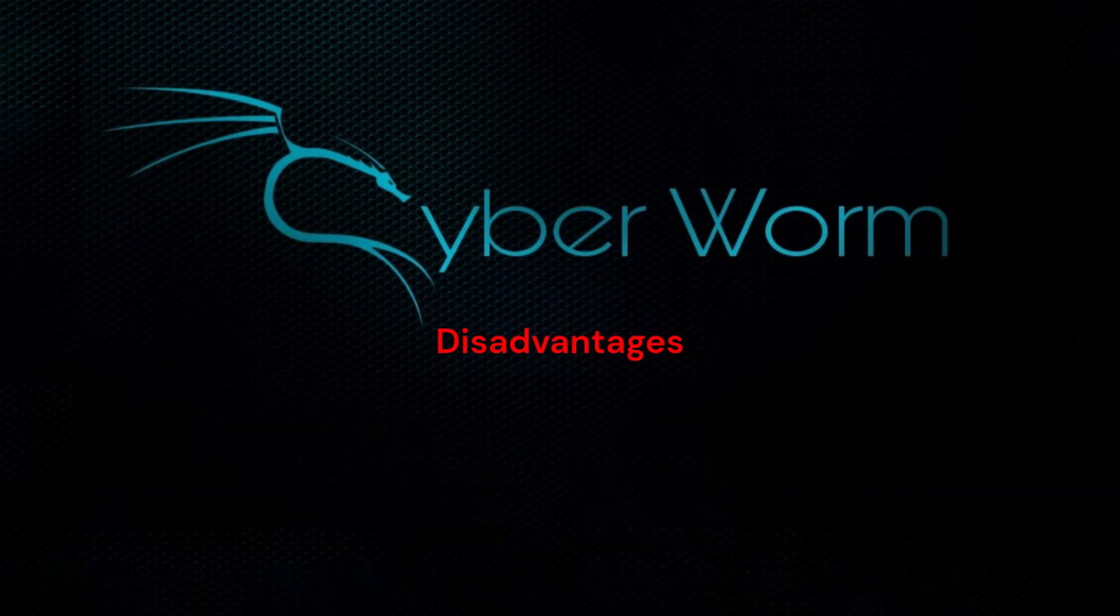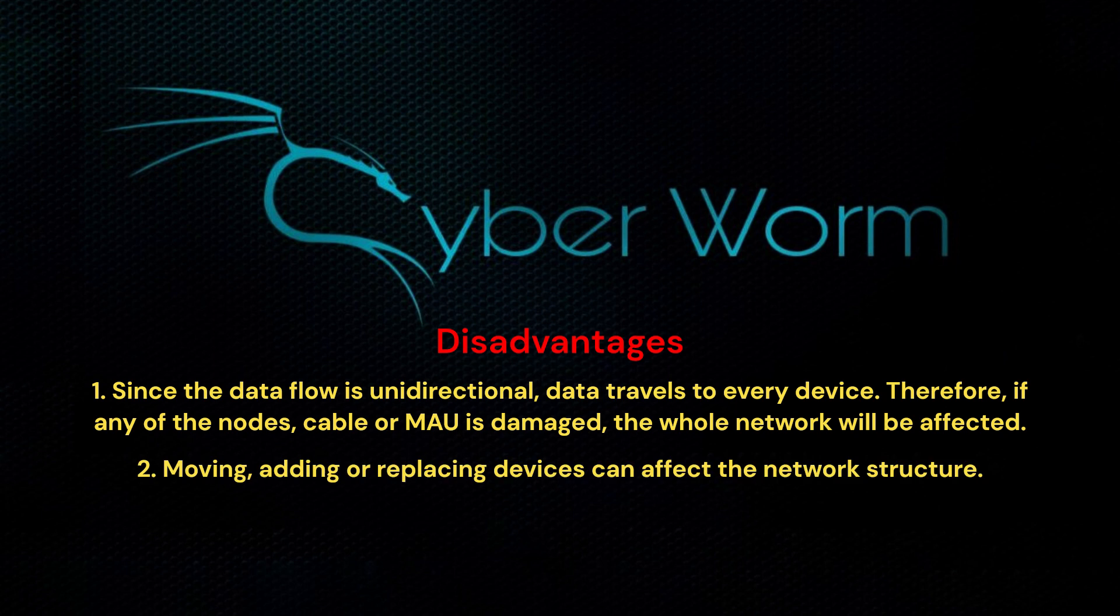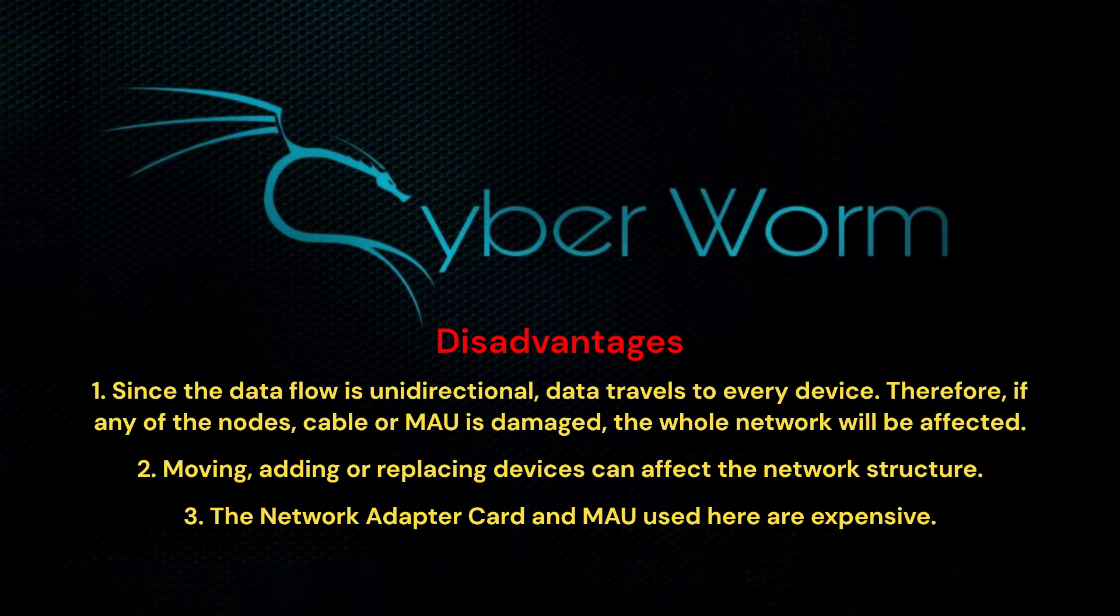Disadvantages: Since the data flow is unidirectional, data travels to every device. Therefore, if any of the nodes, cable, or MAU is damaged, the whole network will be affected. Moving, adding, or replacing devices can affect the network structure. The network adapter card and MAU used here are expensive. It is the most expensive topology known.